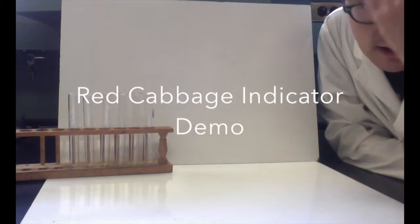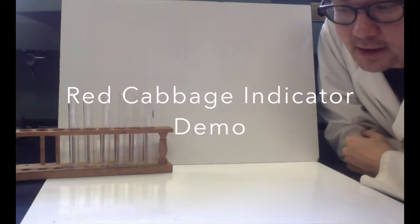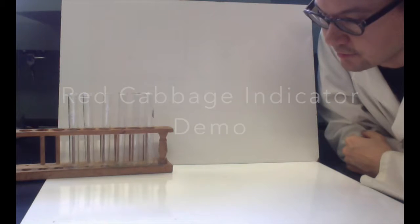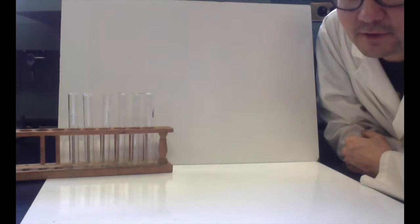Hello, this is Mr. Sasaki, and I'm going to do a demonstration of some acid and base chemistry with an indicator that is a purple or blue grape-colored substance made out of red cabbage.